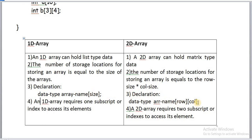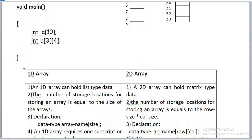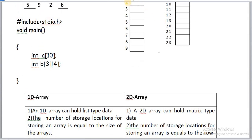The 1D array declaration syntax is: data type, array name, array size. The 2D array declaration syntax is: data type, array name, row size, column size. A 1D array requires 1 subscript or index to access its element, while a 2D array requires 2 indexes — also called subscripts or dimensions — along with the array name.